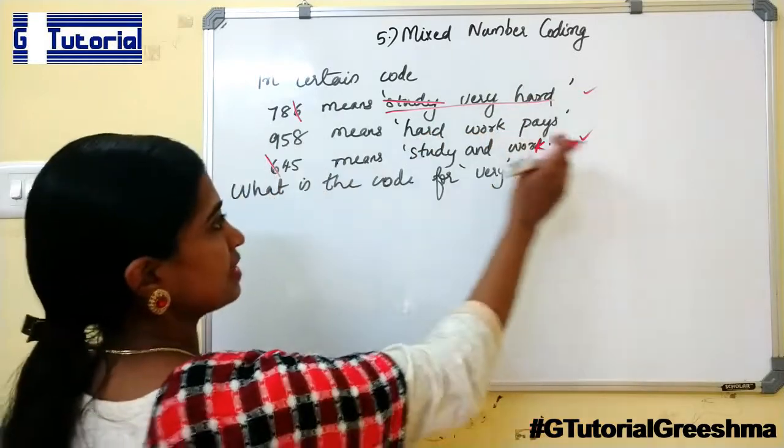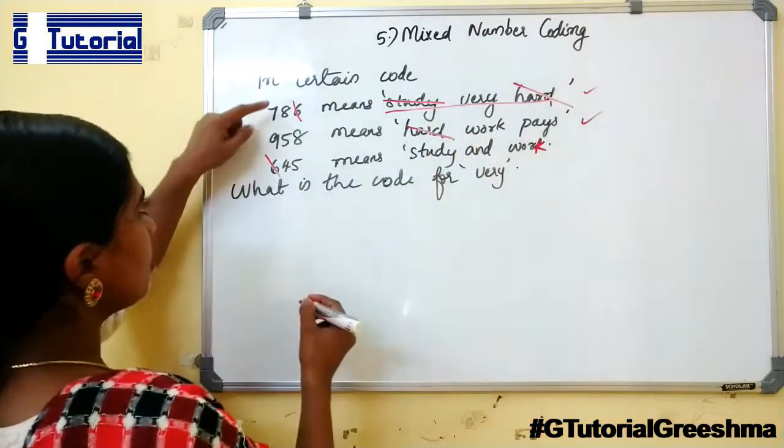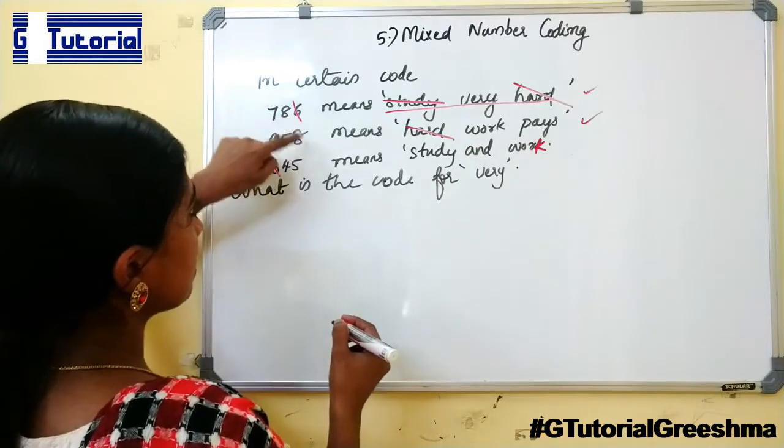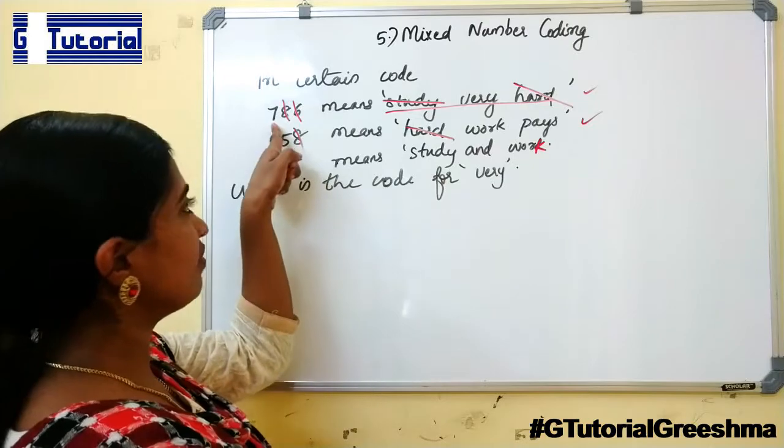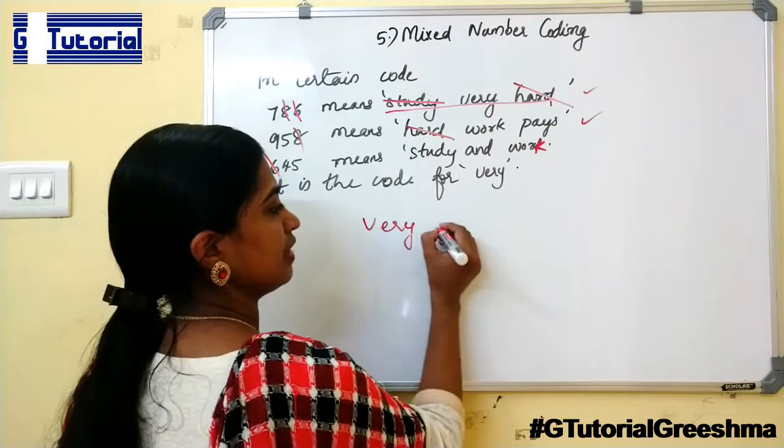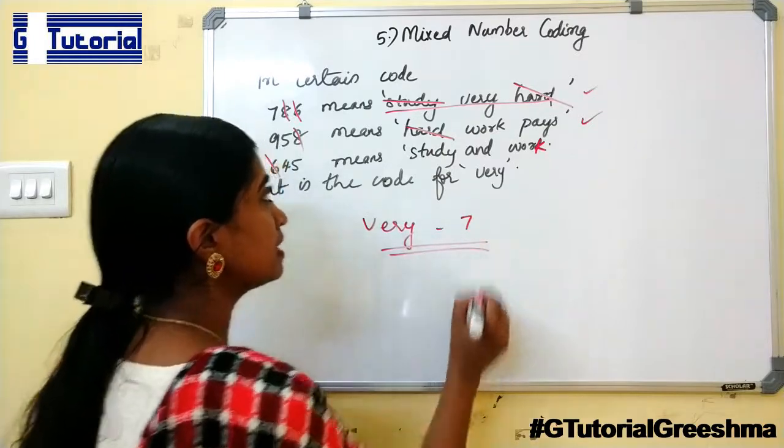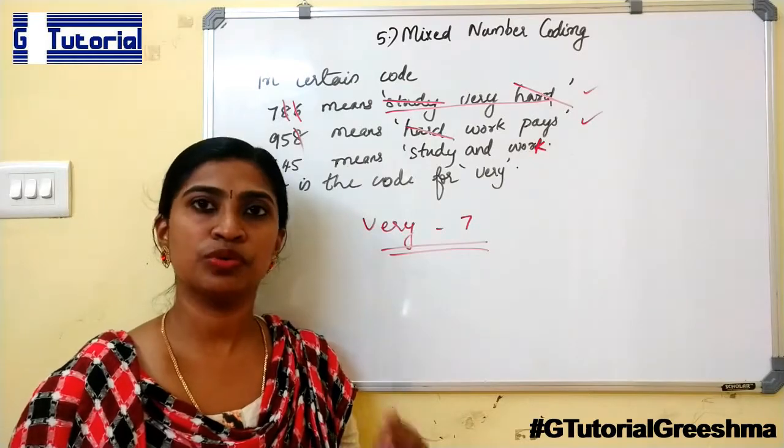Hard is present here and in this sentence. So hard can be eliminated. The common numbers in those two is 8. So only 7 remains. So the code of very is 7. This is how we are facing problems from mixed number coding. Now we can move on to the sixth type.